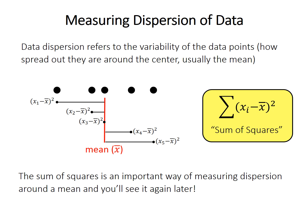But the sum of squares, on its own, isn't used to quantify dispersion that often, because its magnitude varies with sample size. You might imagine the sum of squares for 1,000 data points is almost certainly going to be larger than the sum of squares for just 10 data points.